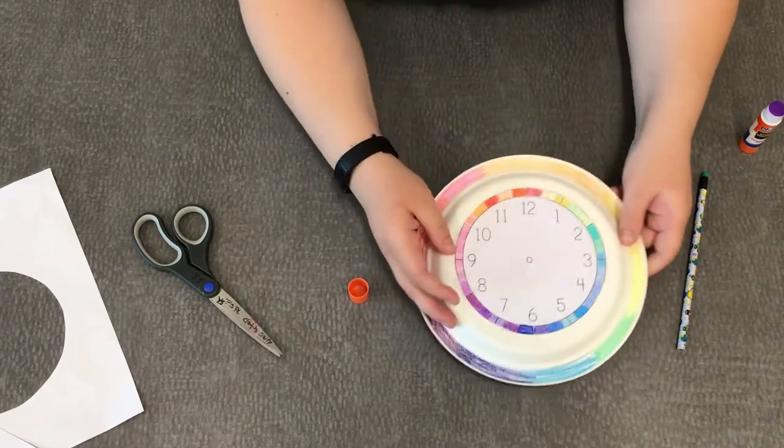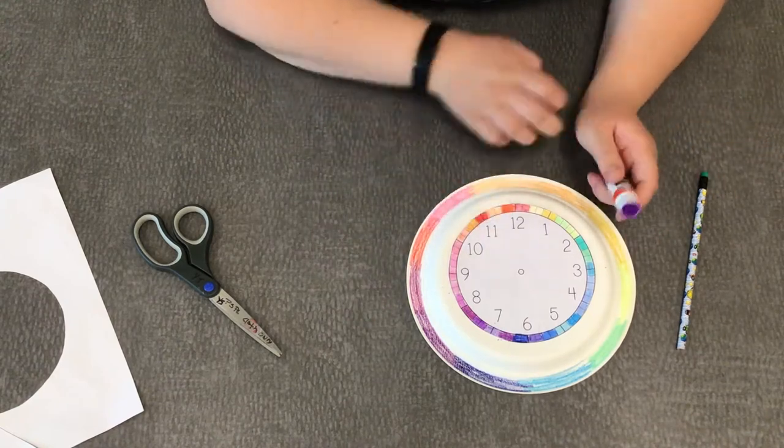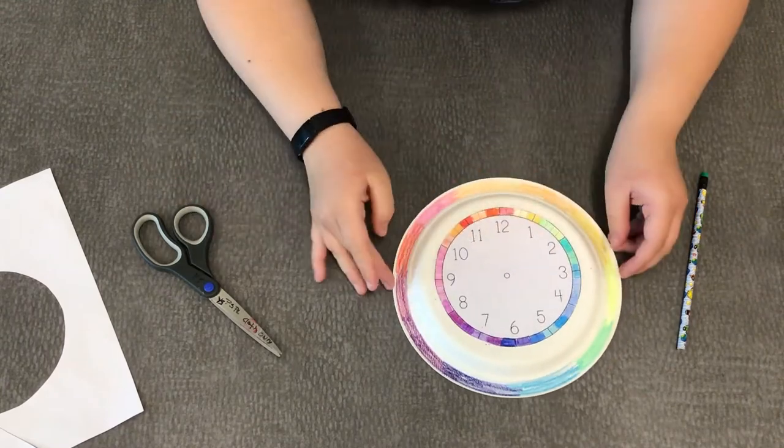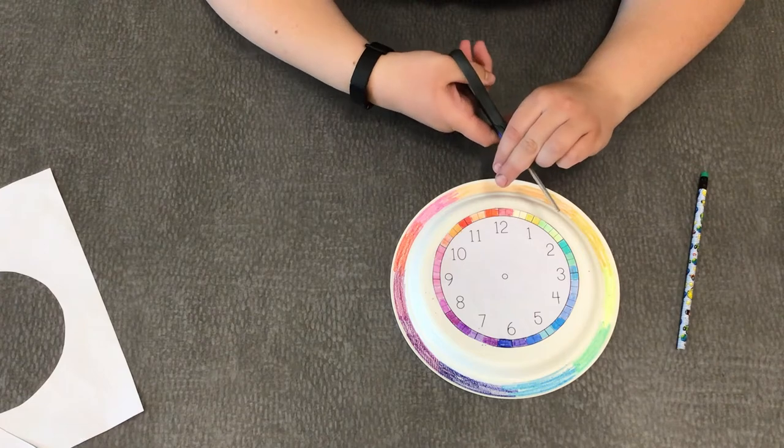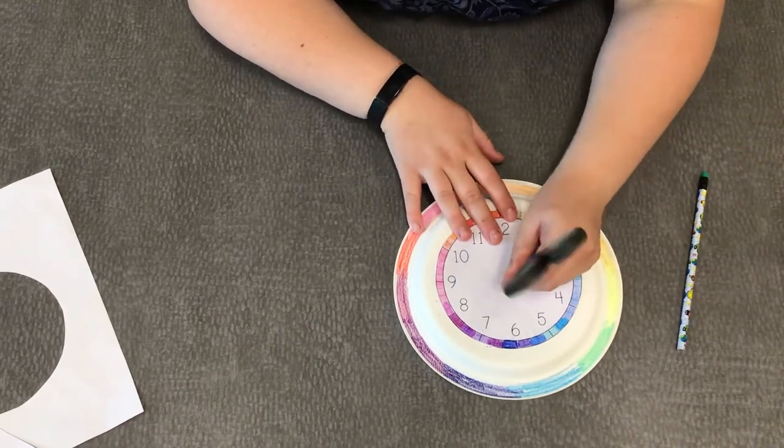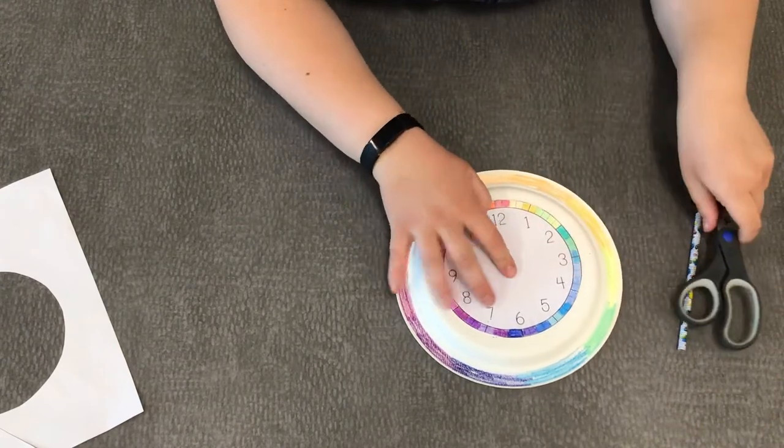So once I have that glued on the next step is going to be to poke a hole to create our sundial. I recommend using a sharp pair of scissors and use a grown-up's help for this part. So I'm just gonna take the end of my scissors, I'm just gonna poke the top of this just like that, kind of twist it around to make my hole and then I'm gonna put my pencil in like this.